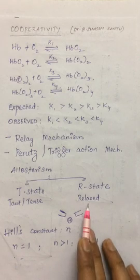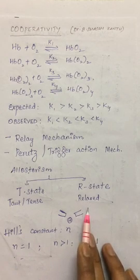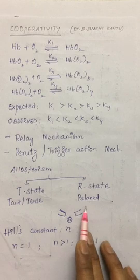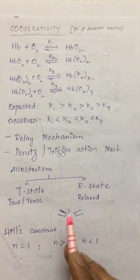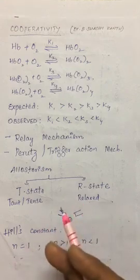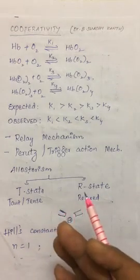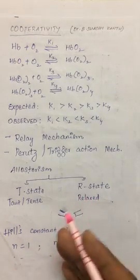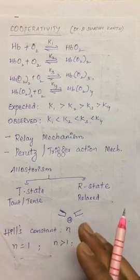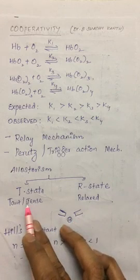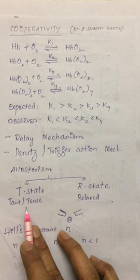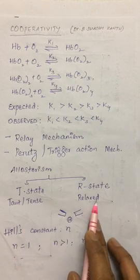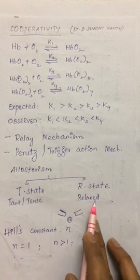The bound state is called the R state or the relaxed state. There are also scientists who believe there is a bound T state that creates a driving force toward cooperativity, but we are not going to discuss that. Generally, T state means unbound hemoglobin and R state means bound hemoglobin.